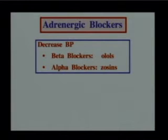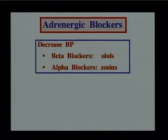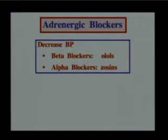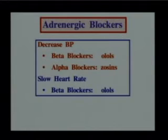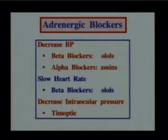Adrenergic blockers decrease blood pressure. There are two categories: beta blockers — you can identify them because they end in '-olol' — and alpha blockers, which end in '-osin.' These simply indicate which fibers of the adrenergic system are blocked. Adrenergic blockers also slow the heart rate, so people with rapid heartbeats are often given beta blockers. You may also see an adrenergic blocker like timoptic used to decrease intraocular pressure.